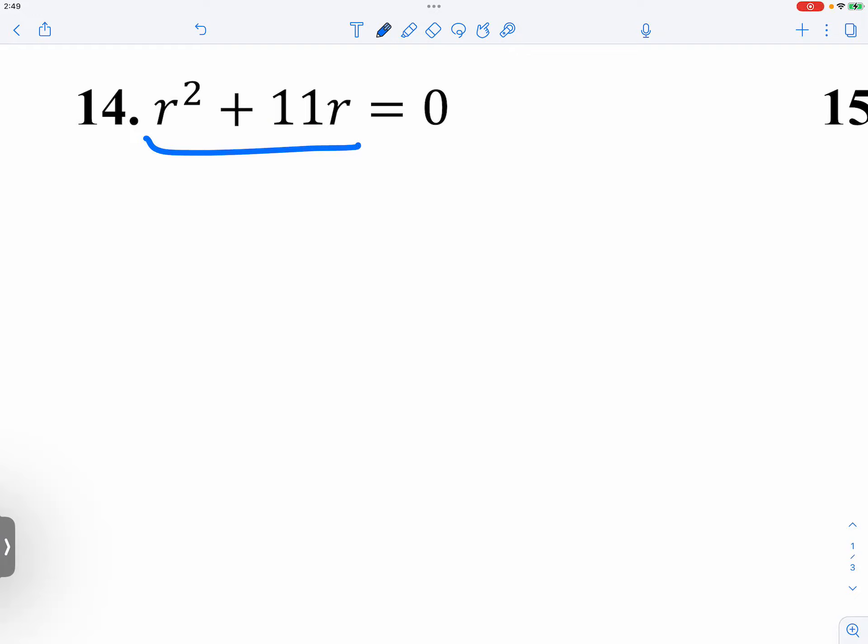Right, so you just factor out the r, and that means r could be 0, because if r is 0, you get the left-hand side, you go to 0. Or r plus 11 is equal to 0, so r is equal to negative 11.